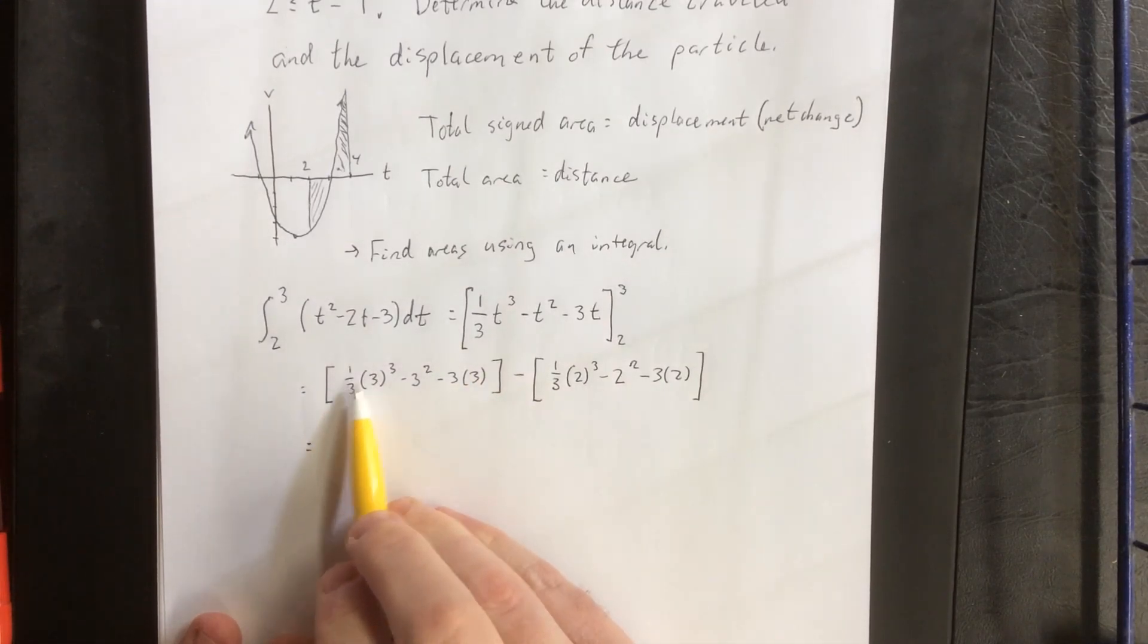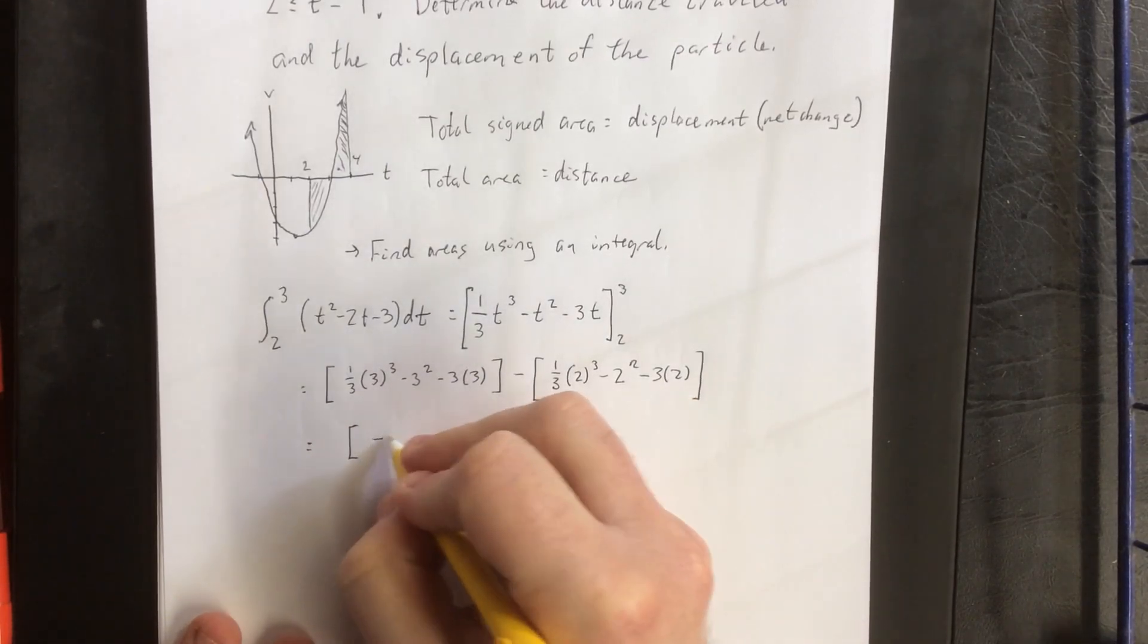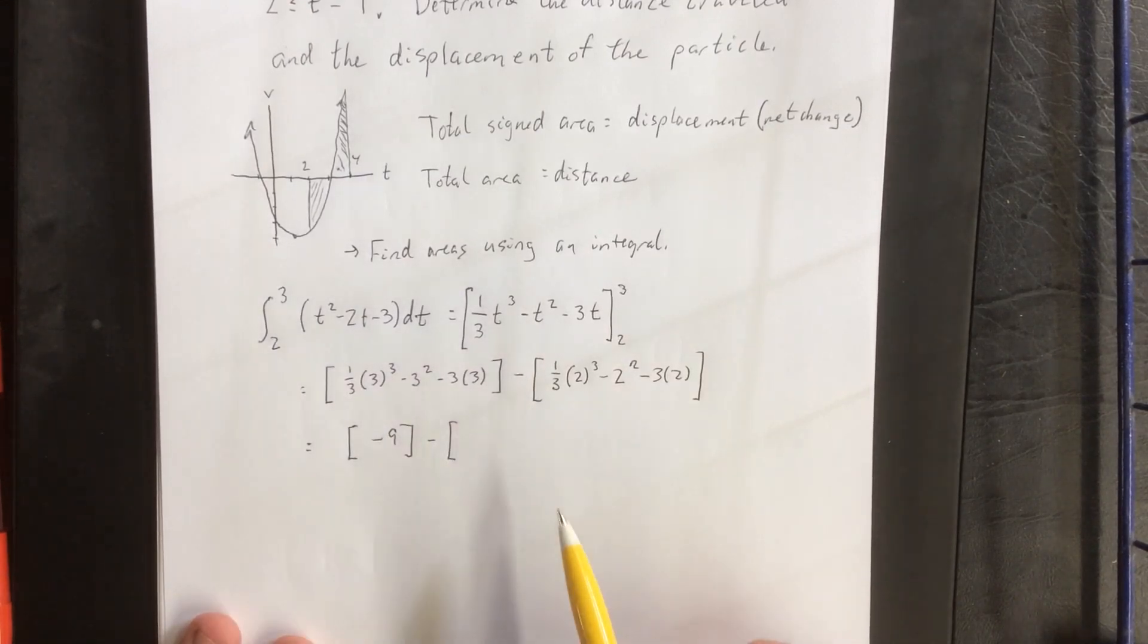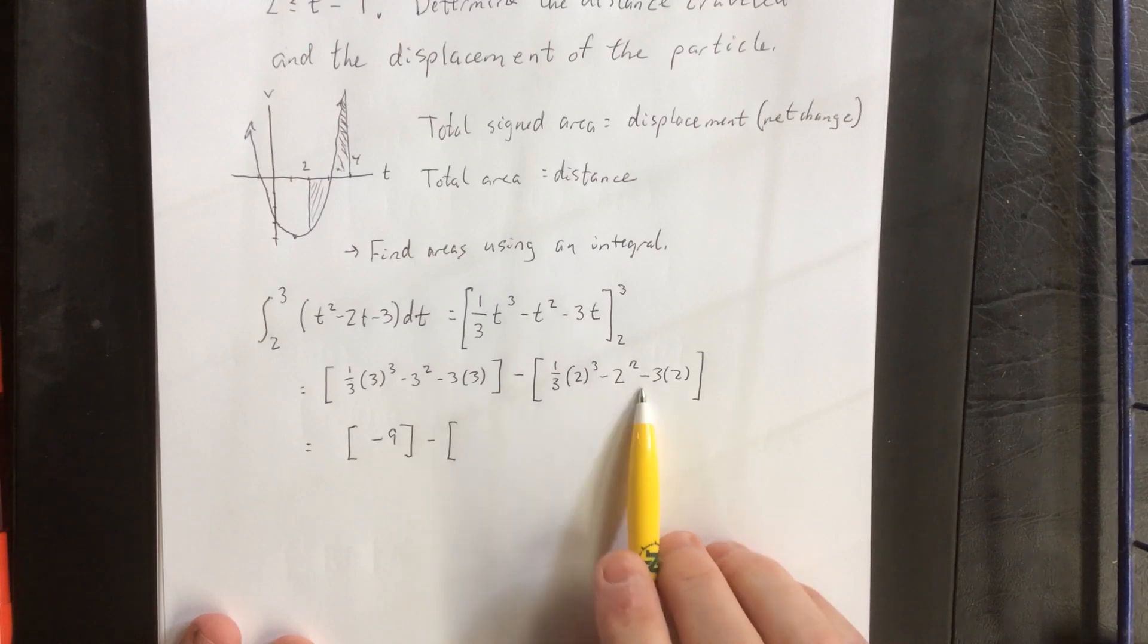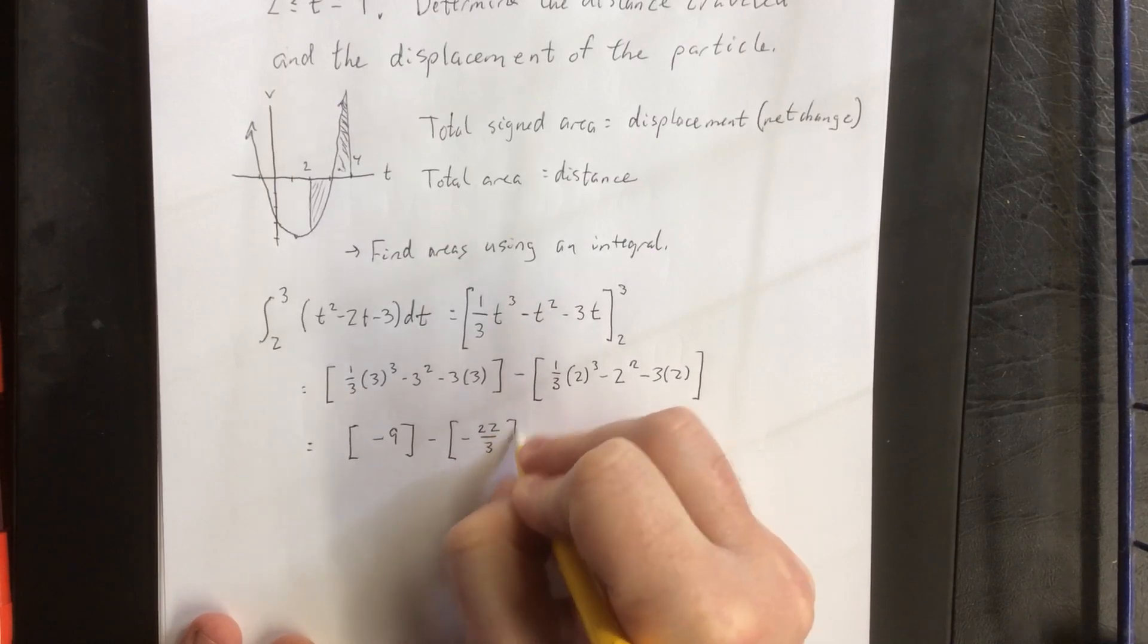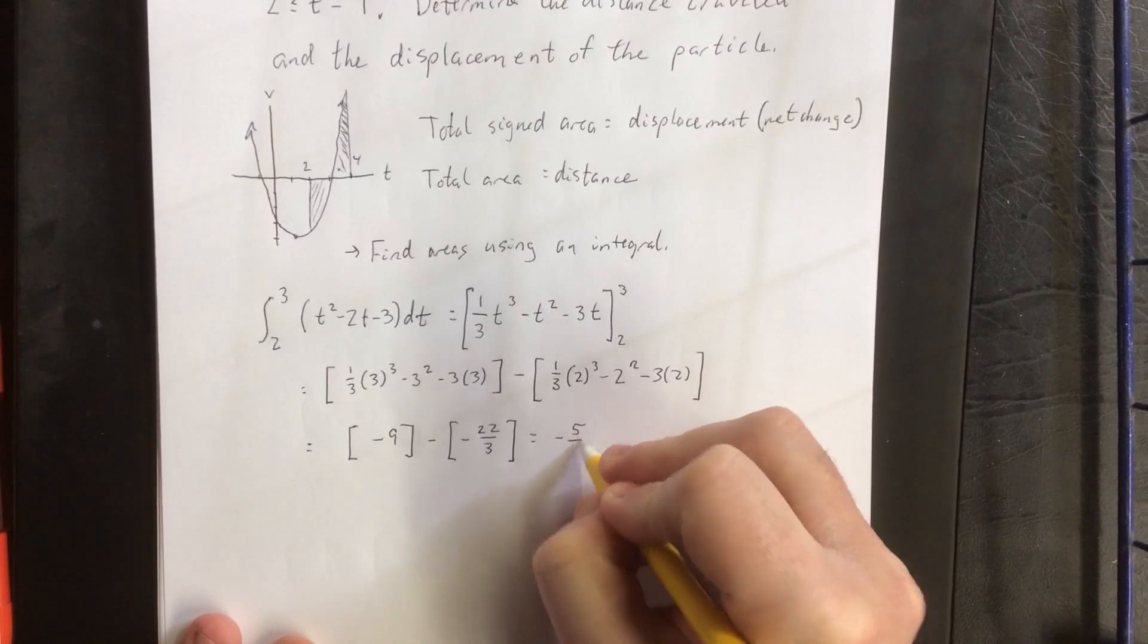Here though, I see ⅓ of 3³, that would be 3². 3² - 3² will cancel. -3 times 3 will be -9 from the first set. And over here I'm seeing 8/3 - 4 - 6. So that'll be 8/3 - 30/3, that'll be -22/3. Now I did anticipate that this number will be slightly negative. Turns out I was right.